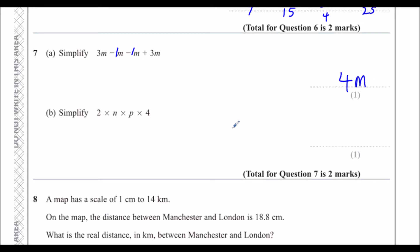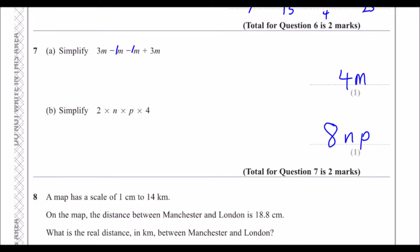Part b: Simplify 2 times n times p times 4. We multiply the two numbers together: 2 times 4 is 8, and we just write np. We don't write a multiplication sign in algebra, so the answer is 8np, meaning 8 times n times p.